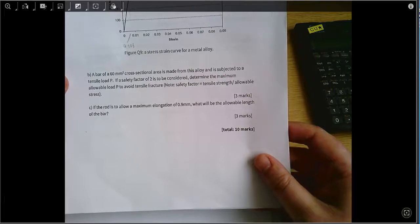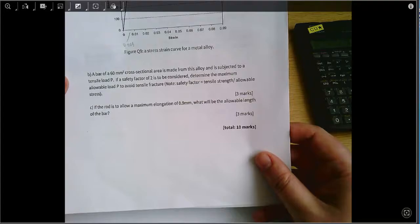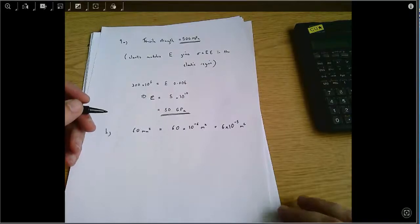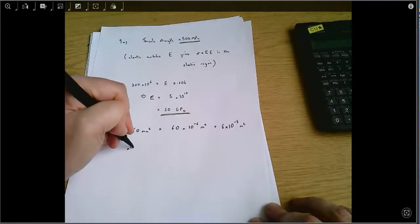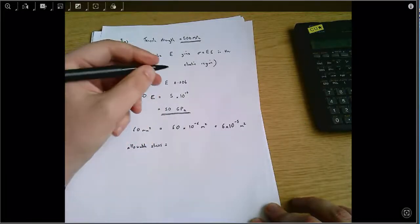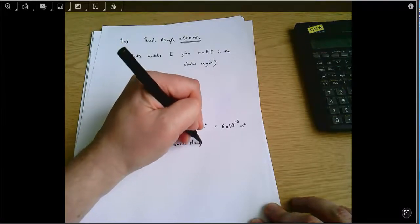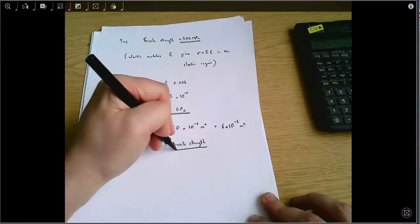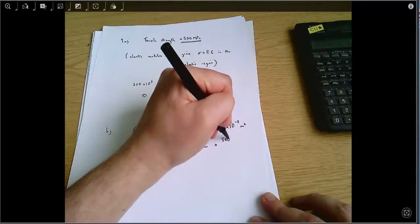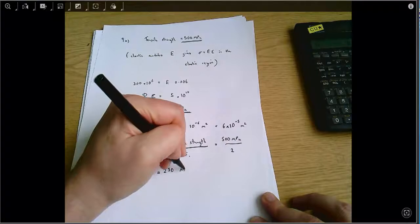We've got a tensile load of P, a safety factor of 2, and the safety factor we're told is the tensile strength divided by the allowable stress. Rearranging that, we can say allowable stress equals tensile strength divided by safety factor, which equals 500 MPa divided by 2, which equals 250 MPa.